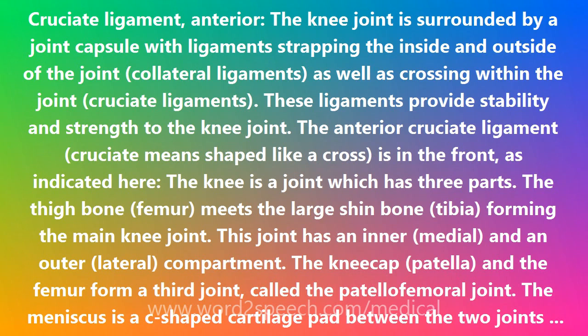The knee joint is surrounded by a joint capsule with ligaments strapping the inside and outside of the joint — collateral ligaments — as well as crossing within the joint, cruciate ligaments.